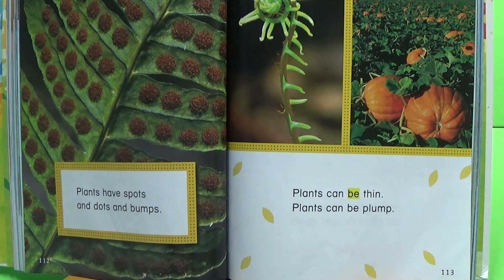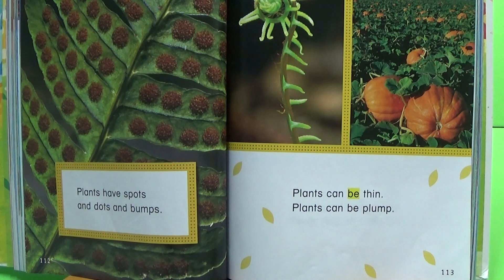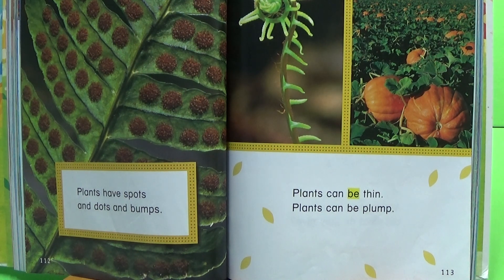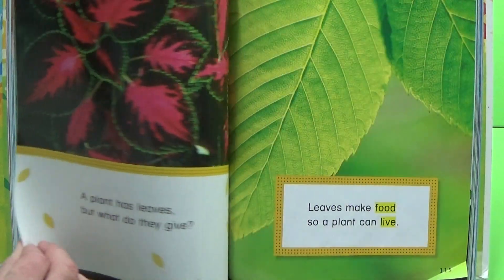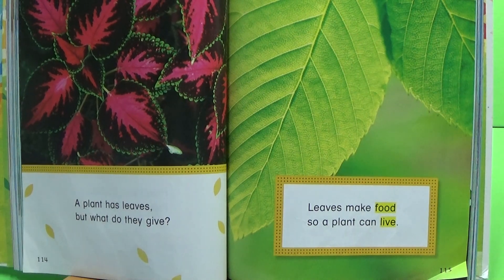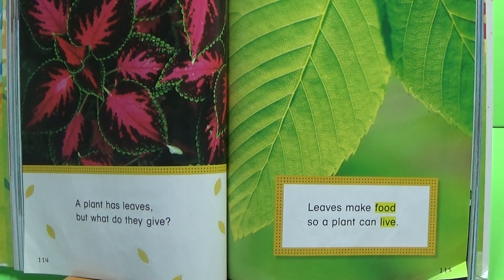Plants have spots and dots and bumps. Plants can be thin, plants can be plump. A plant has leaves, but what do they give?